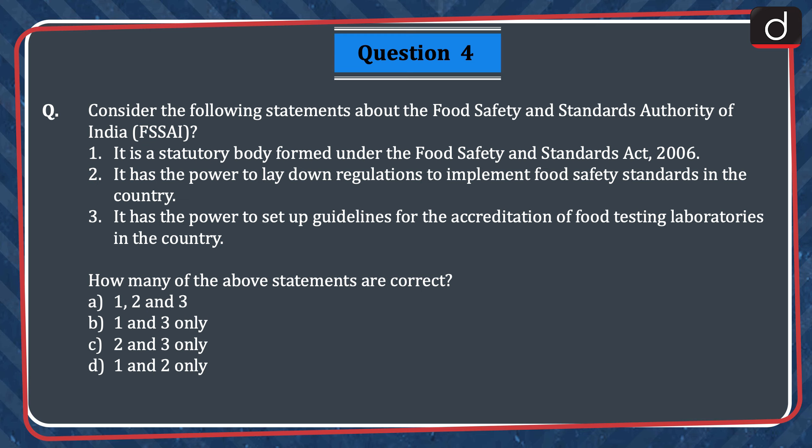Next question: consider the following statements about the Food Safety and Standards Authority of India, i.e. FSSAI. 1. It is a statutory body formed under the Food Safety and Standards Act, 2006. 2. It has the power to lay down regulations to implement food safety standards in the country. 3. It has the power to set up guidelines for the accreditation of food testing laboratories in the country. How many of the above statements are correct? All three (1, 2 and 3), 1 and 3 only, 2 and 3 only, or 1 and 2 only? The correct answer is option A, 1, 2 and 3.